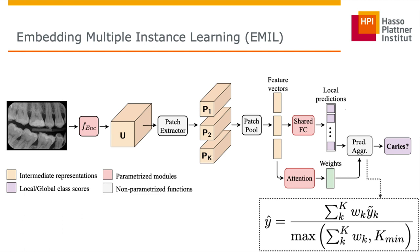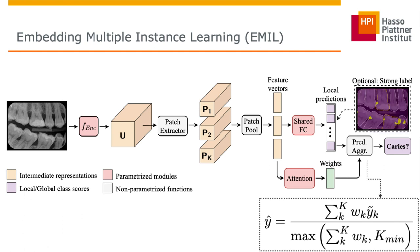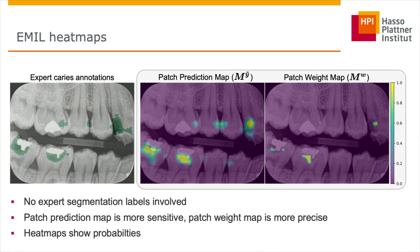Special to our approach is the introduction of a constraint in the denominator of the aggregation function, where the hyperparameter Kmin controls how many patches need to be attended to confidently classify an image as positive. We follow the standard multiple instance learning assumption and set Kmin to 1 in our main experiments. Since the model outputs local patch predictions, dense segmentation labels can be included to help the model localize the salient information.